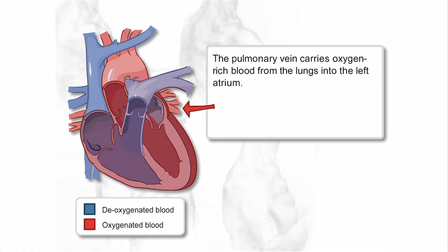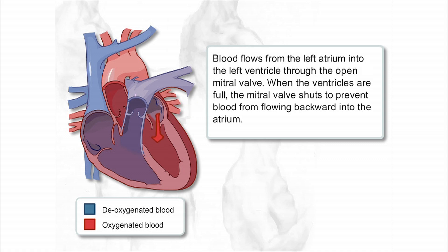The pulmonary vein carries oxygen-rich blood from the lungs into the left atrium. Blood flows from the left atrium into the left ventricle through the open mitral valve. When the ventricles are full, the mitral valve shuts to prevent blood from flowing backward into the atrium.